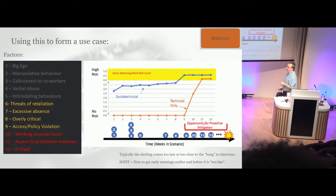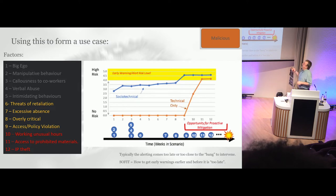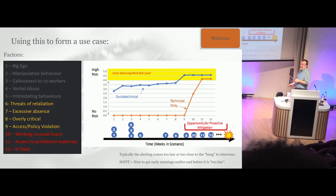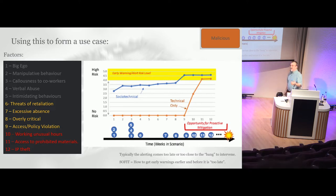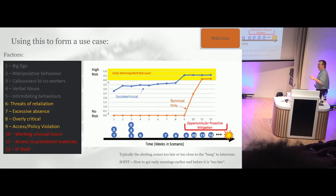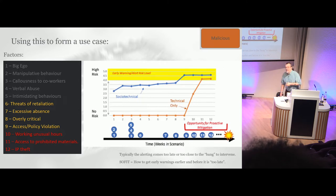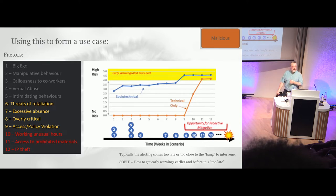This is often called the 'left of the bang' diagram. It shows that we mainly rely on technical factors to indicate when a threat is about to happen. The problem is the socio-technical — the squishy stuff — may actually give us an earlier warning that we miss because we don't take it into account. HR has always been the go-to for this, but they may not have the visibility needed. Behavioral signs include: a big ego, manipulation of others, callousness to co-workers, verbal abuse, intimidating behaviors, threats of retaliation — statements like 'this company couldn't operate without me' — that's an early warning.